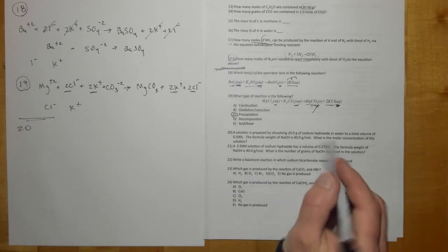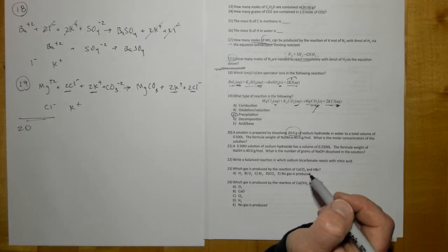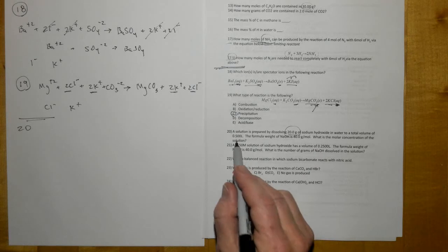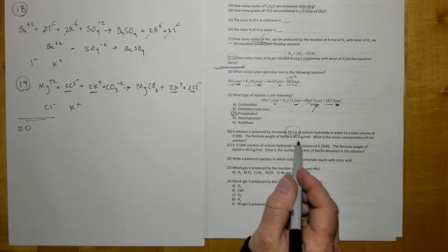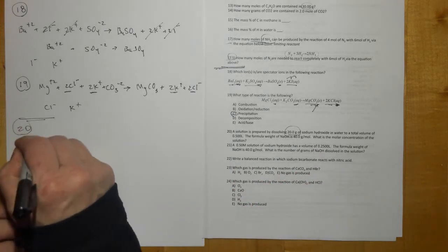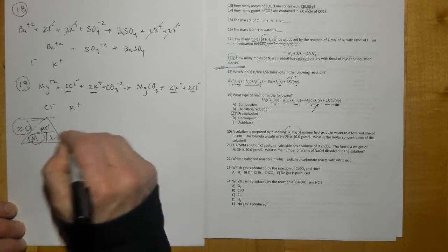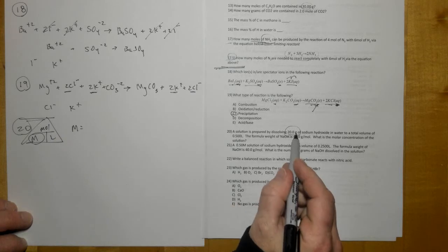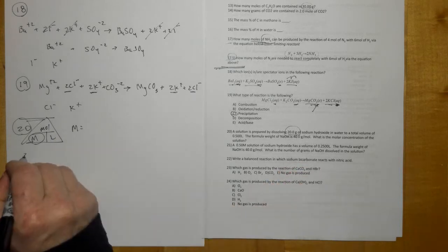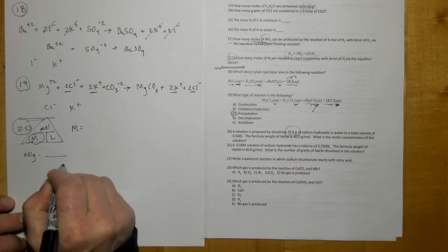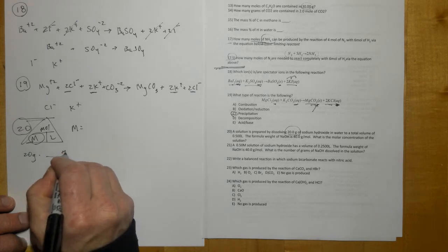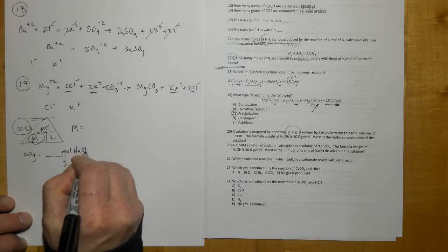Number 20: the solution is prepared by dissolving 20 grams sodium hydroxide in water to a total volume of 0.5. What is the molar concentration? So molarity is equal to moles divided by liters. We're going to look for molarity, so molarity equals the number of moles of sodium hydroxide that are in there. So we need to convert from grams to moles, 20 grams.